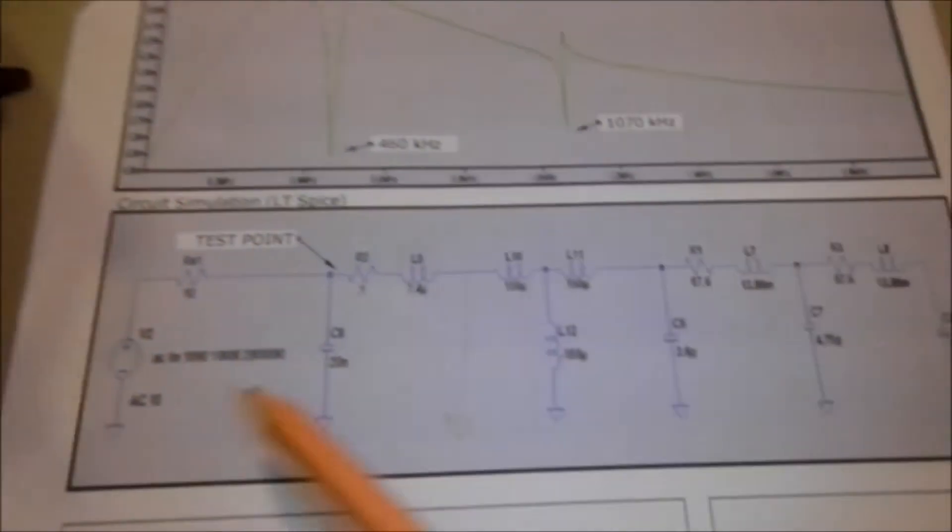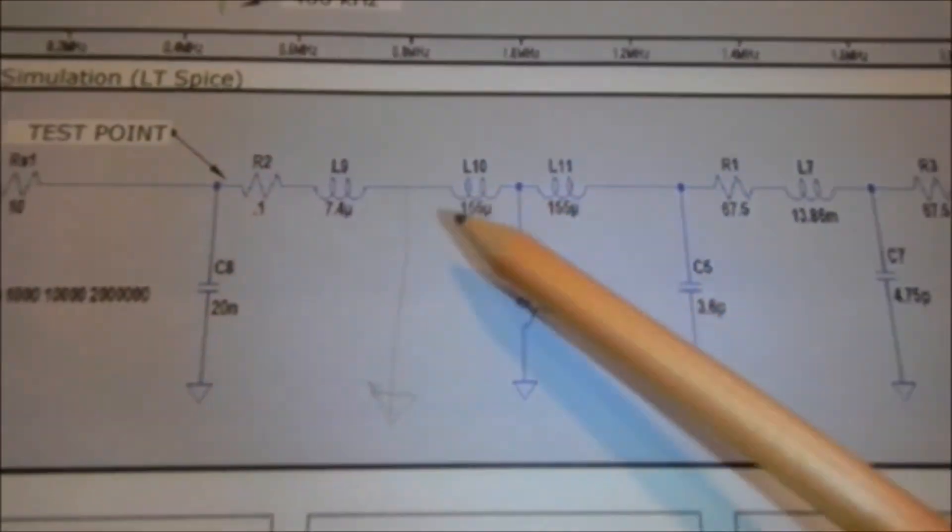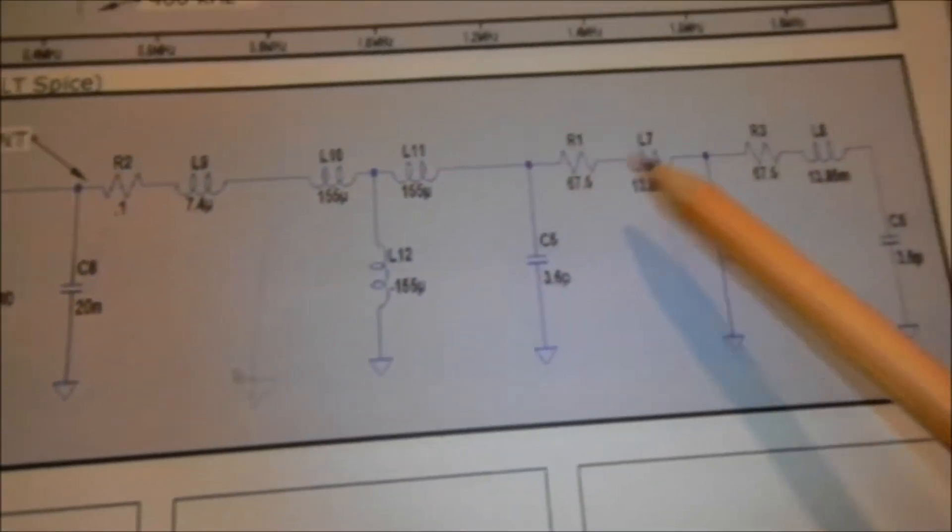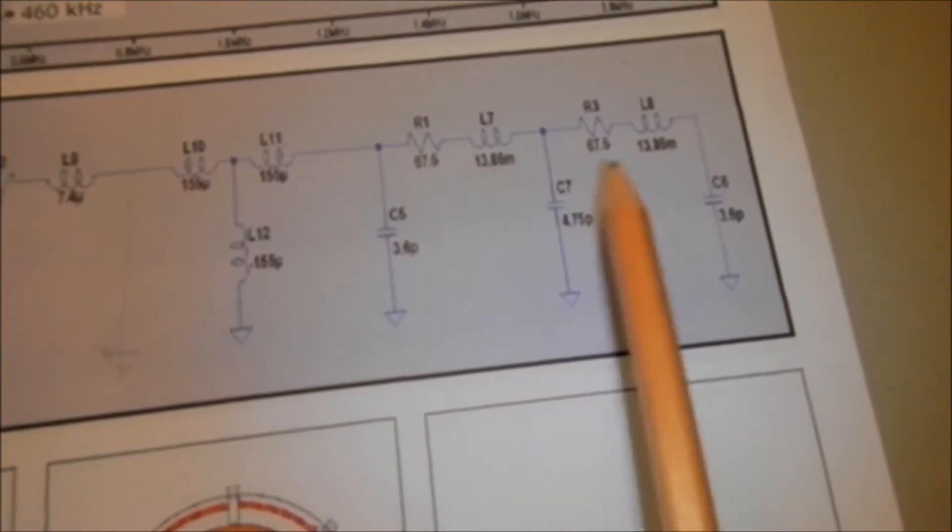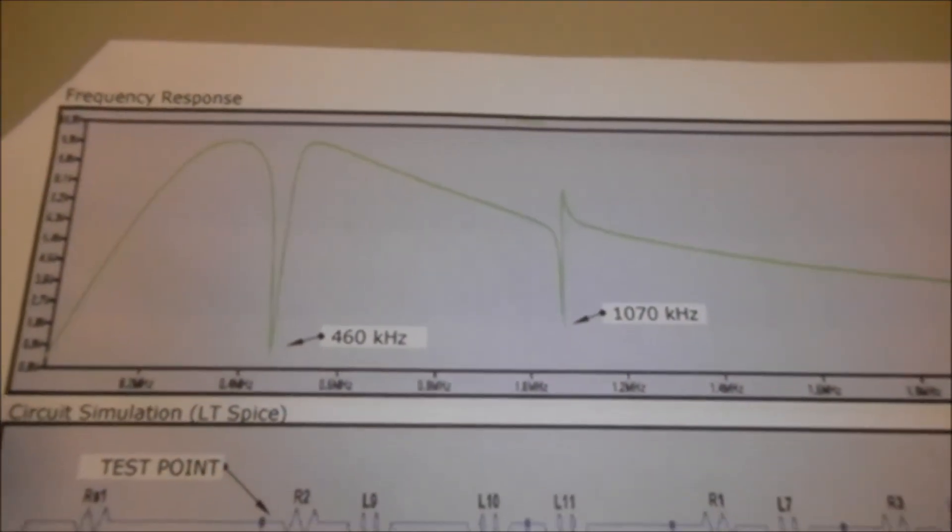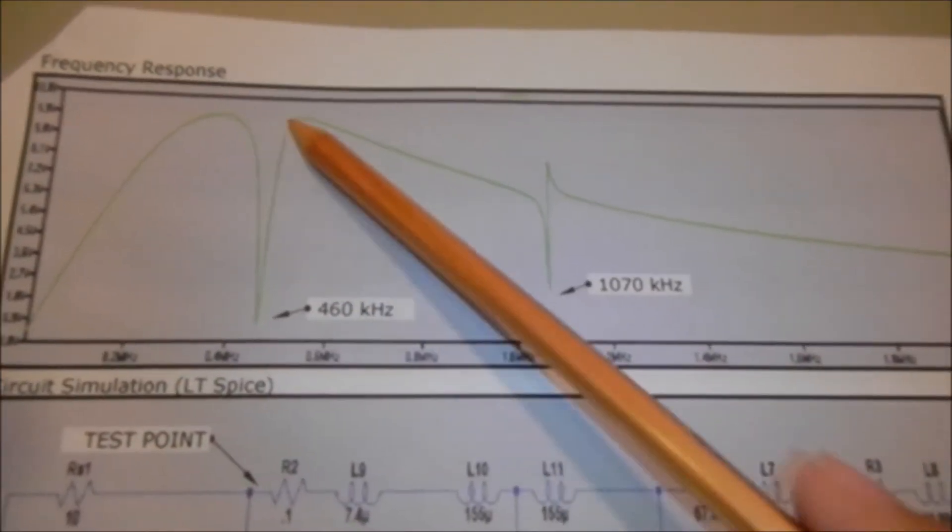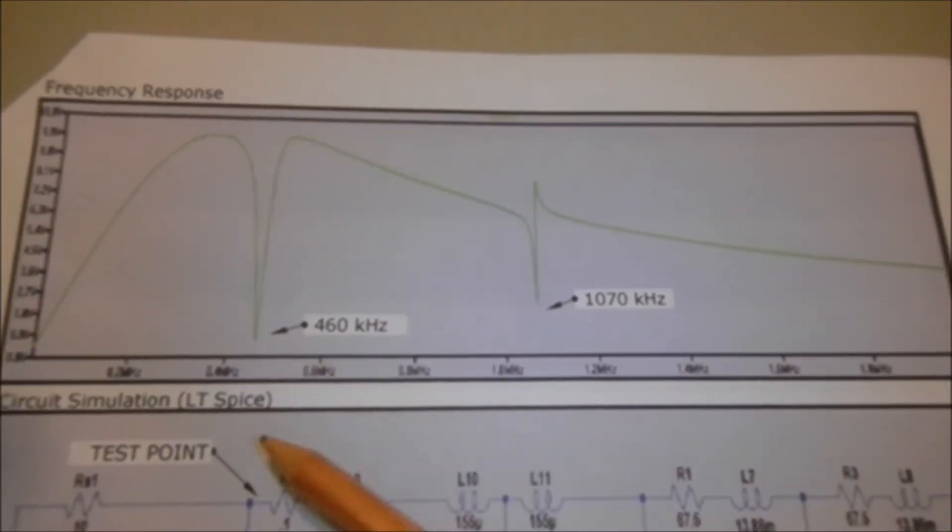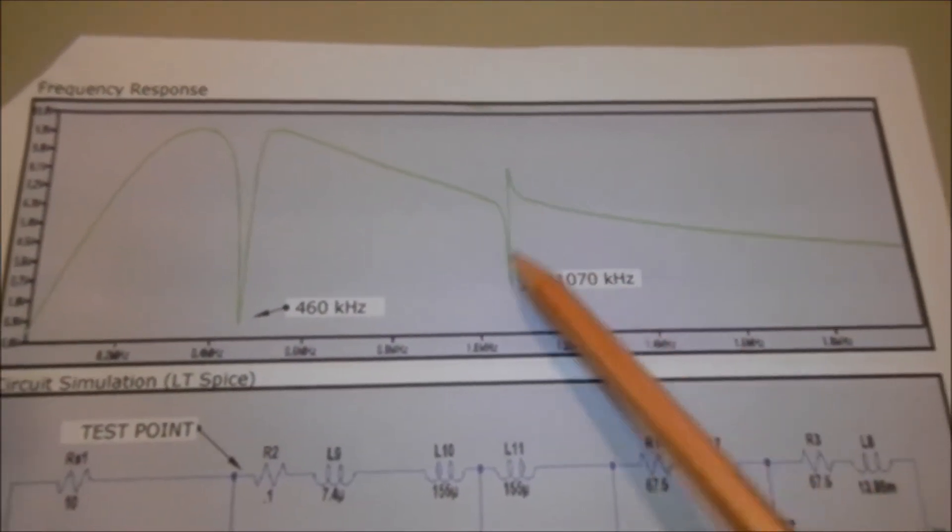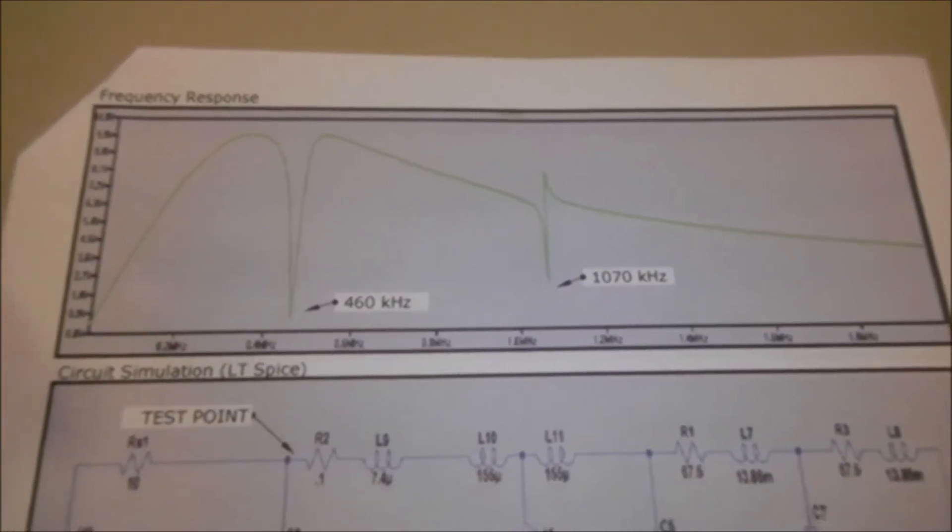So we ran a simulation of this whole circuit network. So the mutual inductance and the distributed inductance and capacitance of the Tesla coil. And we got a frequency response that looks something like this. We see the main dip at 460 kilohertz, and we see a little secondary dip where the secondary resonant frequency occurs.